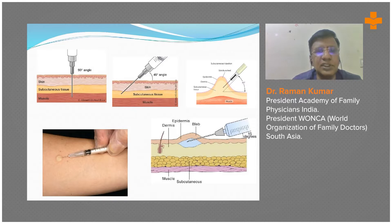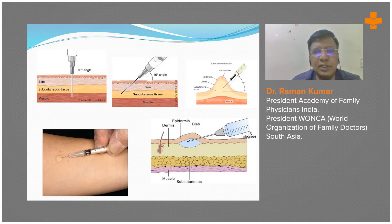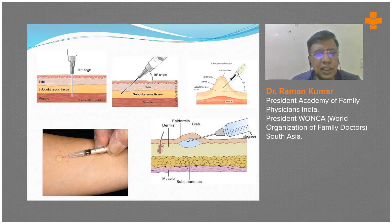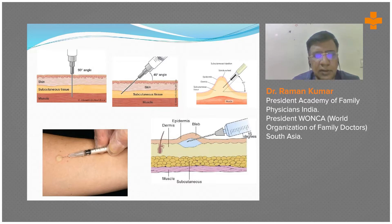Looking at the structure — skin, subcutaneous tissue, then muscle — intramuscular should go into muscle, while subcutaneous should go below the skin but not into the muscle. To give a subcutaneous injection, you pinch the skin and make an angle of 45 degrees.